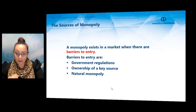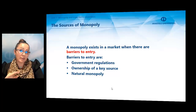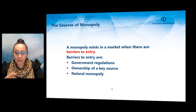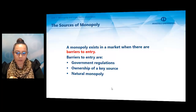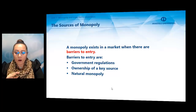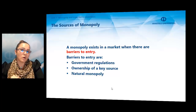Government regulations are exclusive rights given by the government to some person or company to sell a good or service. Ownership of a key source occurs when a company has control of a key resource — for example, De Beers, the diamond mining and marketing company of South Africa, controlled almost all of the world's diamond production for years. A natural monopoly occurs when economies of scale are so large that one firm can supply the entire market at a lower average cost than two or more firms.